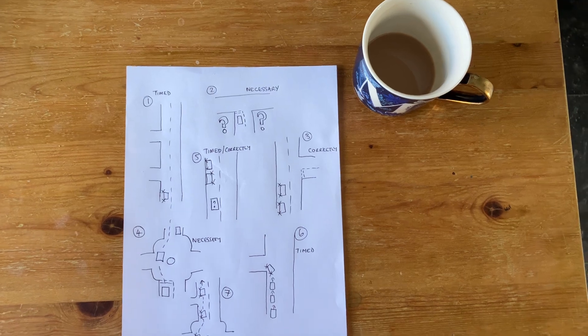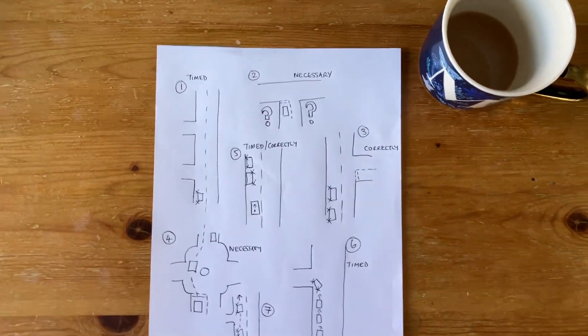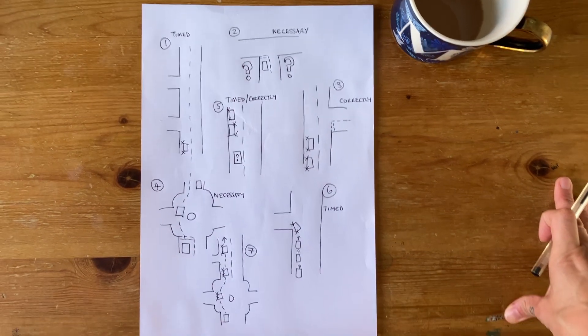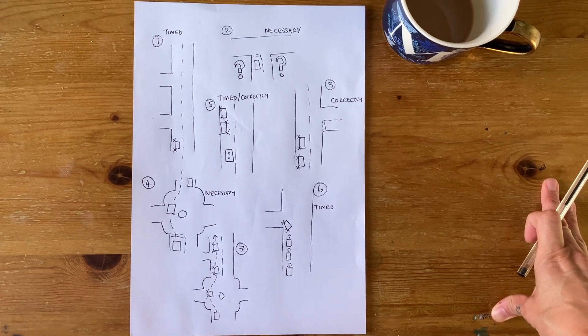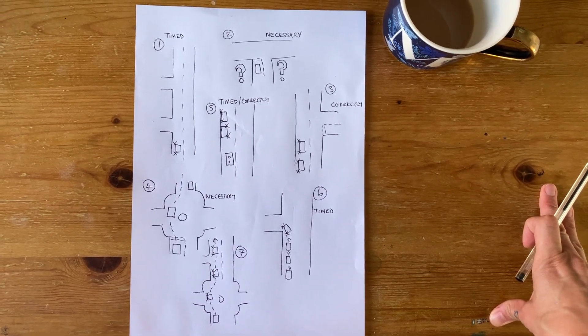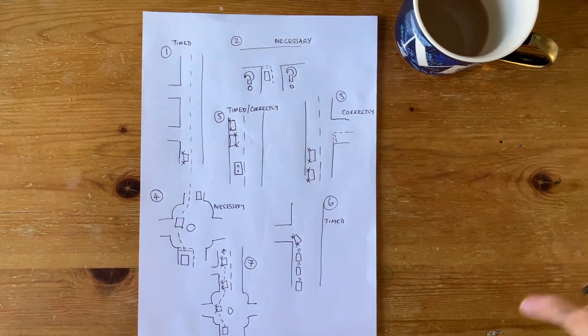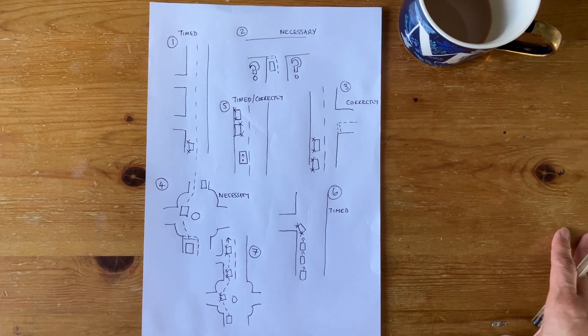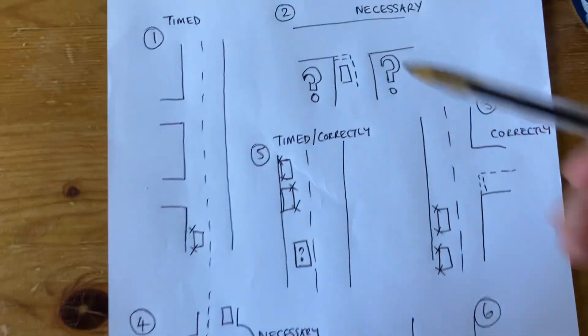These are some of the reasons why you can fail for using incorrect signals. Perhaps the timing of your signal is wrong, perhaps it wasn't necessary to put it on, perhaps it should have been correctly done or it was incorrectly done, and perhaps it was necessary. Timed, necessary, or correctly - those are all the boxes on the form when you go to your driving test.